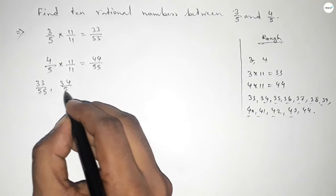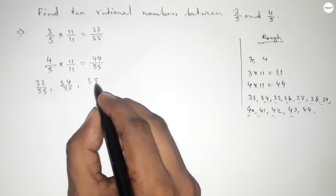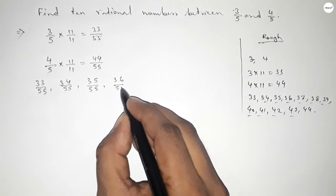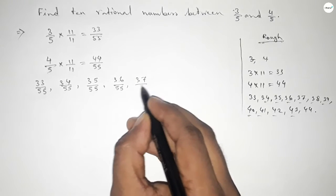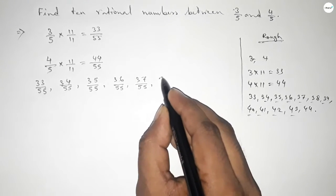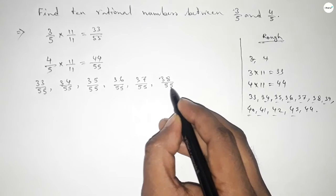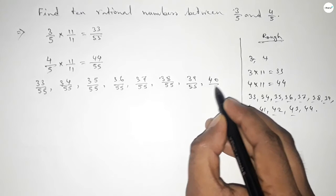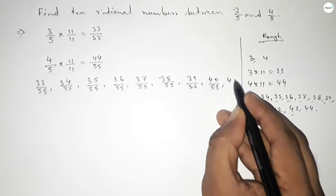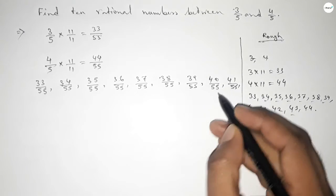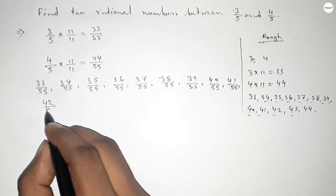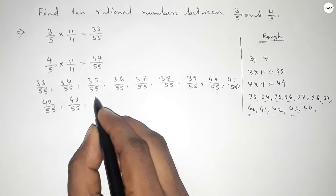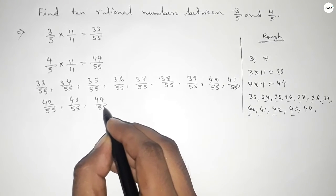So here all the rational numbers are 33 over 55, 34 over 55, 35 over 55, 36 over 55, 37 over 55, 38 over 55, 39 over 55, 40 over 55, 41 over 55, 42 over 55, and last one 44 over 55.